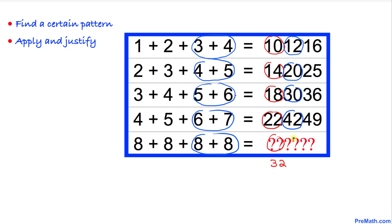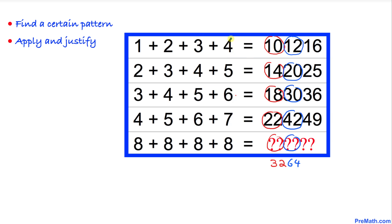So that means when we multiply eight times eight, the next two digits are going to be 64. And finally, let's look at this last number.